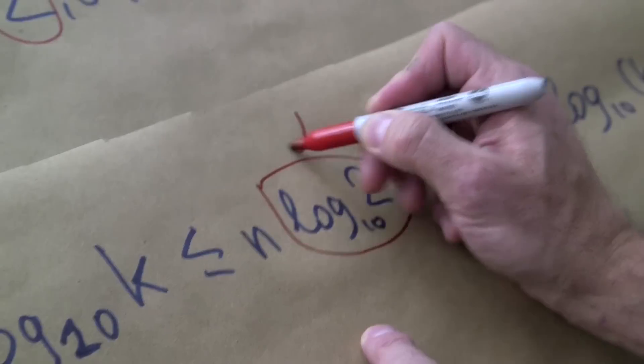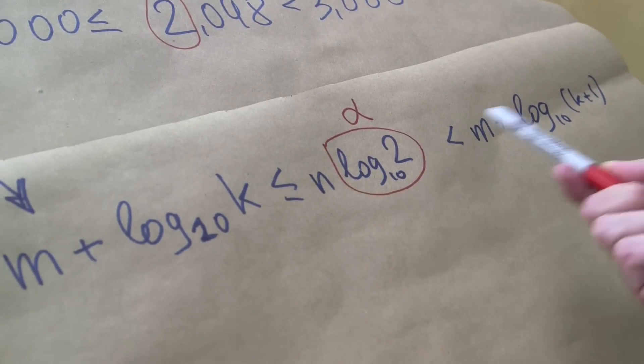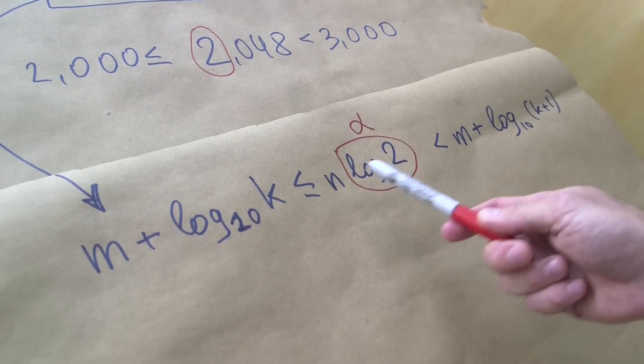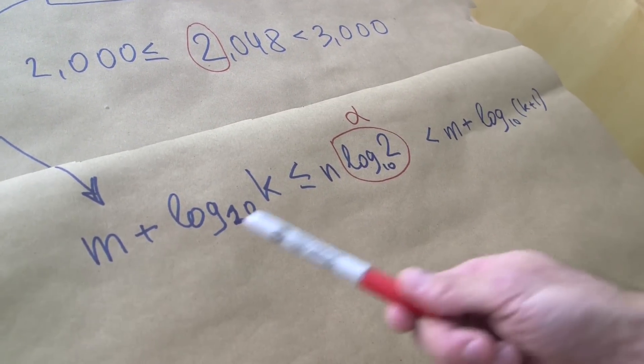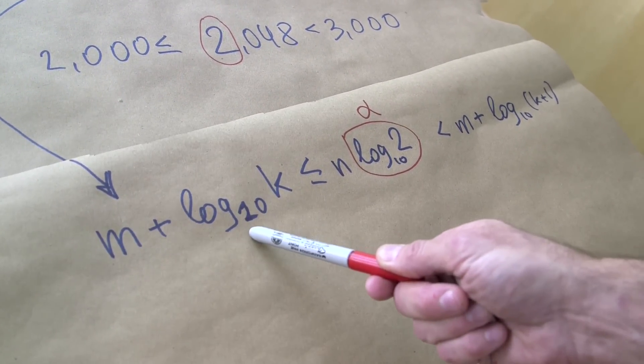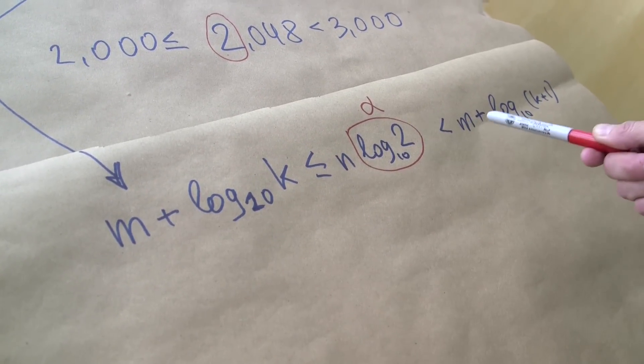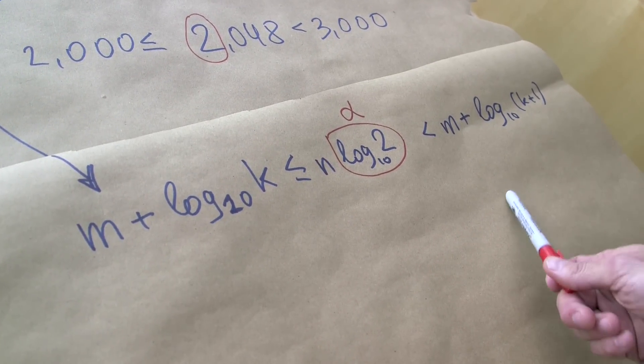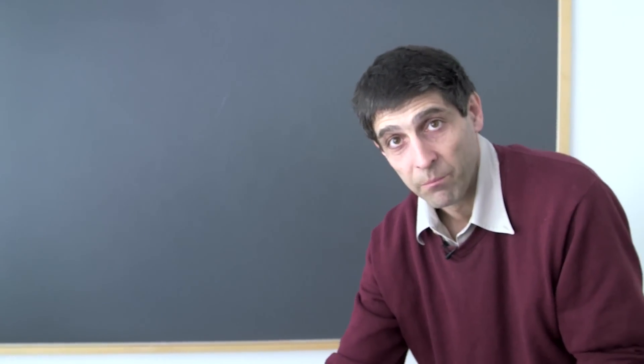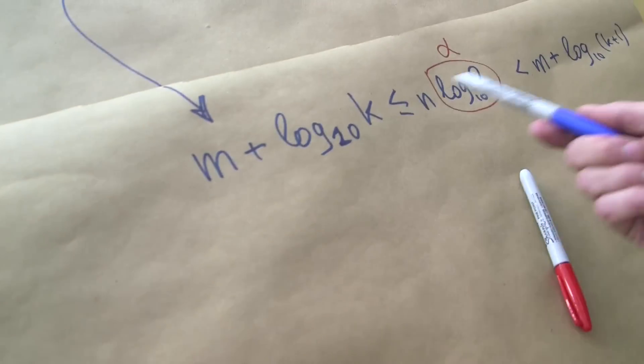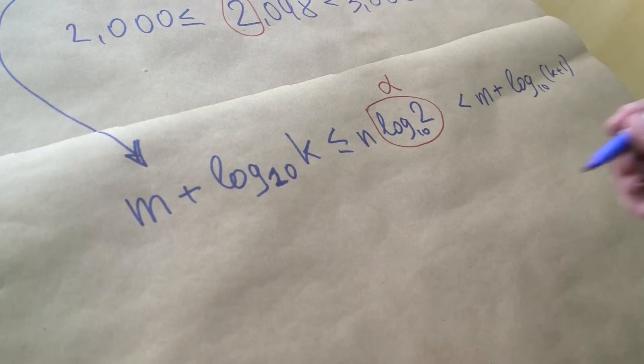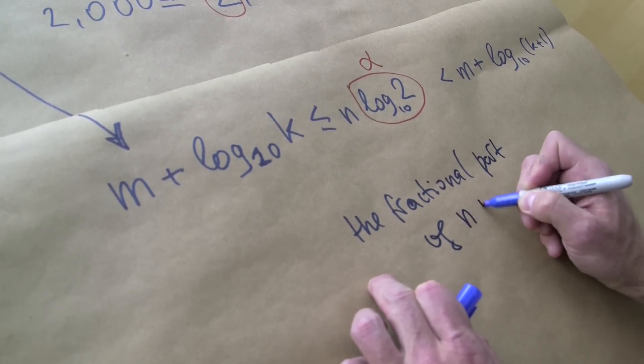Let me call it a Greek letter alpha. So what do we see? We see that n times alpha is between this and this. This is m plus some number between 0 and 1, and this is also m plus some number between 0 and 1. But then we can get rid of m because what's important is the fractional part.